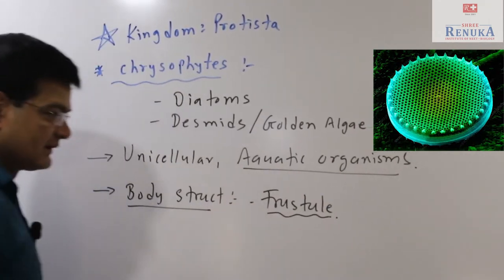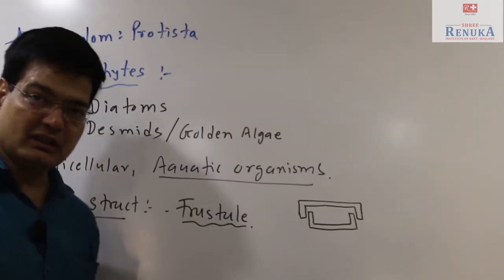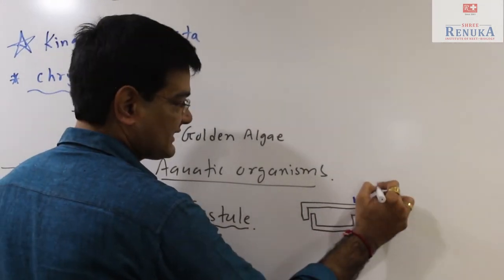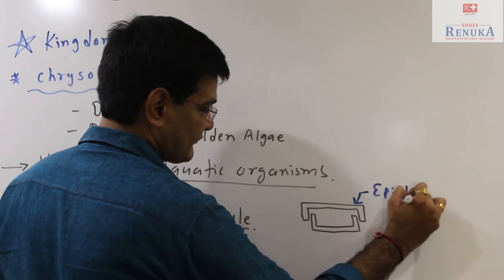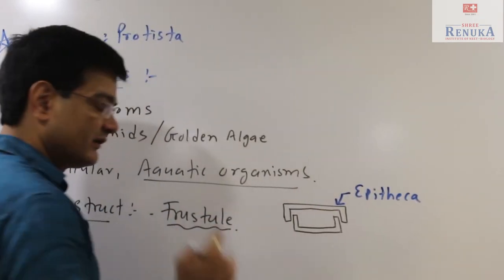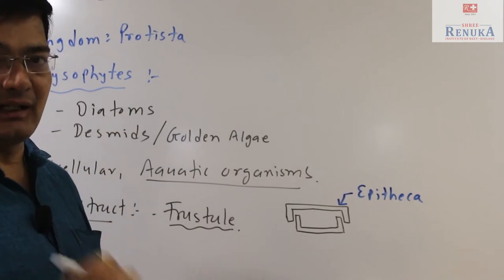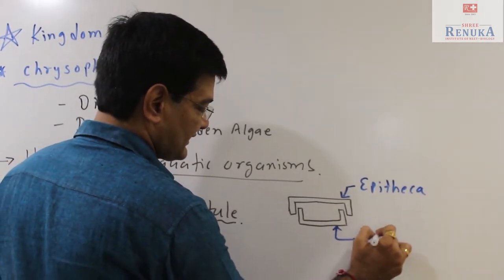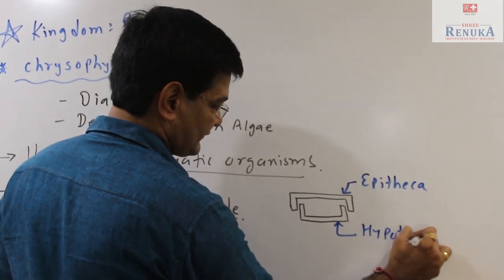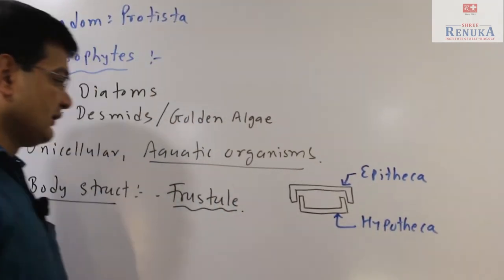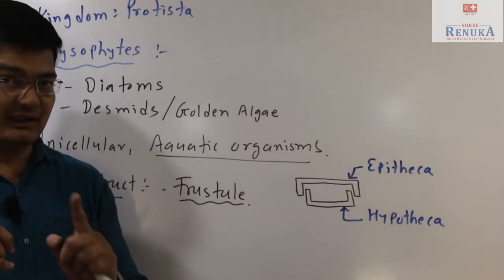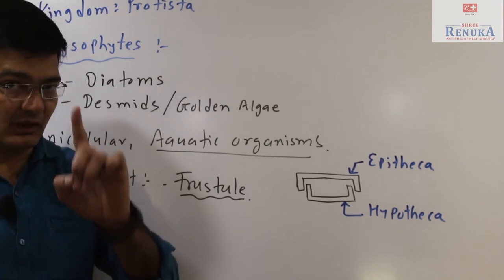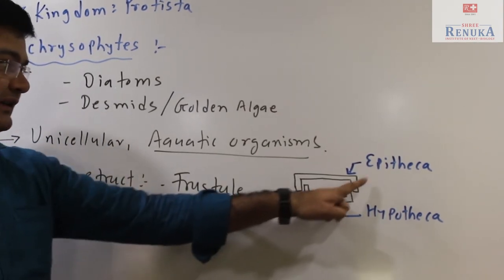It is like a soap box-like structure. This frustule is formed of two main parts: epitheca, the upper covering which is formed of cellulose and silica, and the lower part is called hypotheca. This way, frustule has two covering or sheet-like structures called epitheca and hypotheca. The organism is present inside the epitheca and the hypotheca.